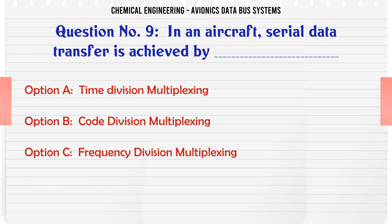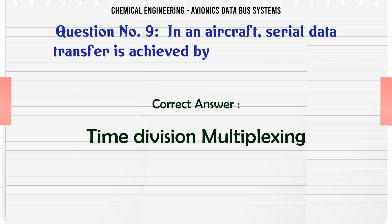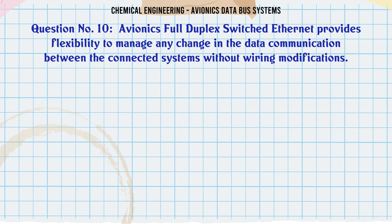In an aircraft, serial data transfer is achieved by: A. Time division multiplexing, B. Code division multiplexing, C. Frequency division multiplexing, D. Pulse modulation. The correct answer is Time division multiplexing.